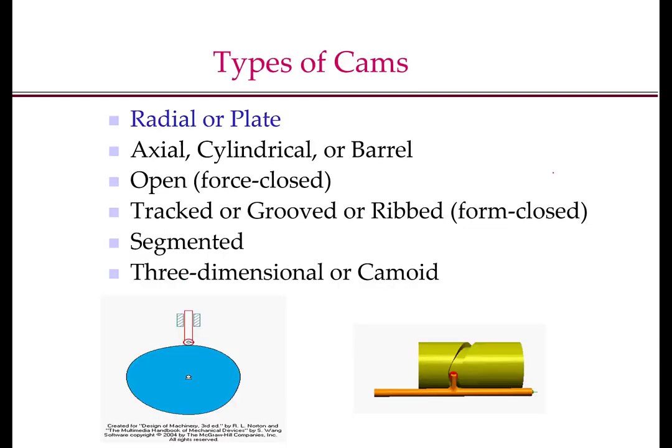There are many different types of cams. For example, the cams that we saw on the last slide and what is also shown here are known as radial or plate cams. In radial or plate cams, the axis of rotation of the camshaft is perpendicular to the plane in which the follower moves. Then there are these axial, cylindrical or barrel cams, which is shown here, where the axis of motion of the follower is along the axis of the camshaft.